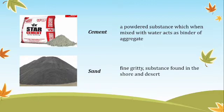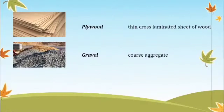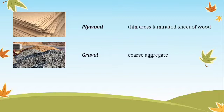Next is sand — fine gritty substance found on shores and deserts. Next, plywood — thin, cross-laminating sheet of wood. Next is gravel — coarse material used in construction.